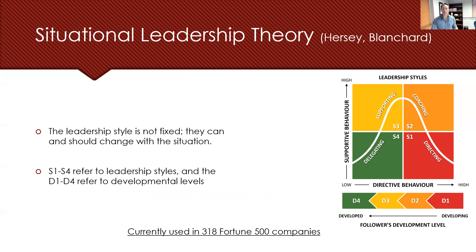S1, the quadrant in the lower right-hand side, focuses on directing behaviors. This depicts a leadership style that's high directive and low supportive. It stresses how the job is to be accomplished, the importance of achieving overall organizational goals, and frequently monitoring that progress.